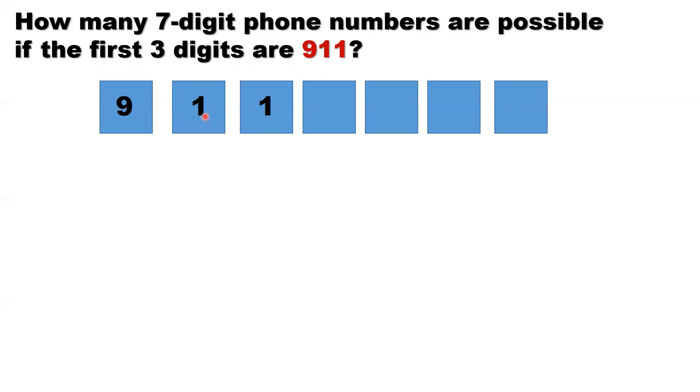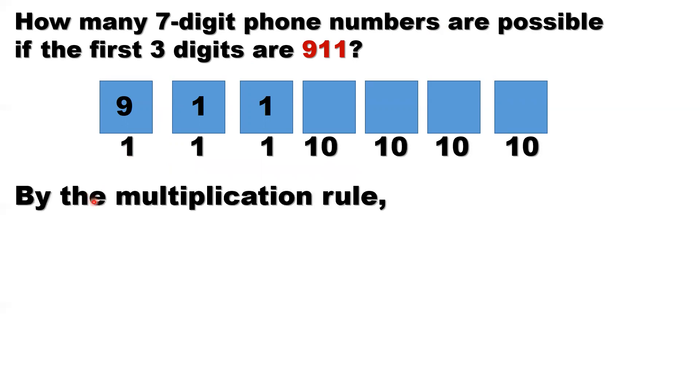So here, same situation. That's one possibility, one possibility. But the remaining 4 digits, you can pick from 0 to 9. Each has 10 possibilities. So the total possibilities are 10 to the power of 4.